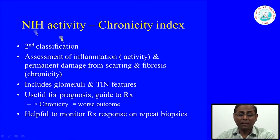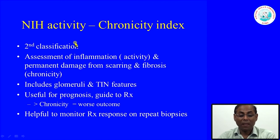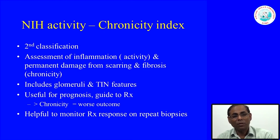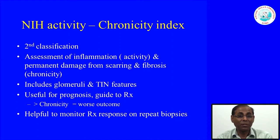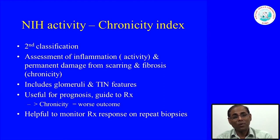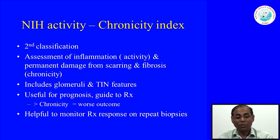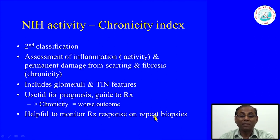In addition to the WHO/ISN/RPS classification, there is a classification based on disease activity and chronicity. When we see the biopsy, it is important for the clinician to know if glomerular or tubulo-interstitial lesions are reversible, because active immunosuppression can reverse reversible disease and restore renal function. Where there is significant fibrosis in the tubulo-interstitium or many glomeruli undergoing sclerosis, this indicates poor prognosis — immunosuppression may not help. We therefore assess an activity index and a chronicity index in each biopsy to monitor and guide treatment.